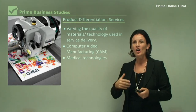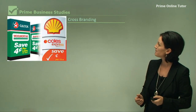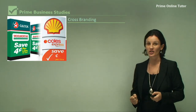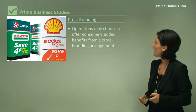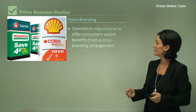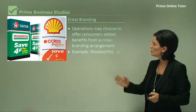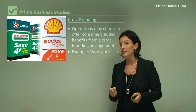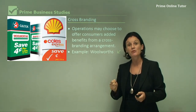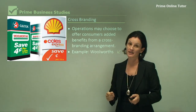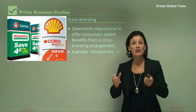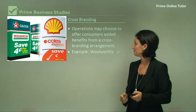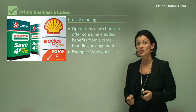Now, cross-branding. You will have noticed that supermarkets and petrol stations are joining forces — we call this cross-branding. They may choose to offer consumers added benefits from a cross-branding arrangement. Woolworths has cross-branded with Caltex. When I go to the supermarket and buy my groceries, when I receive my receipt, I will notice that it will enable me to get a discount off fuel at Caltex. Consumers love this relationship — it means they are saving costs at home, and the business loves it because it gives them a competitive advantage. Well, that ends the lesson on strategic planning. See you next time.